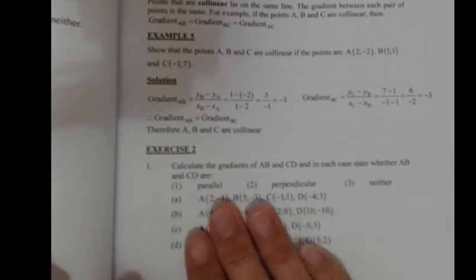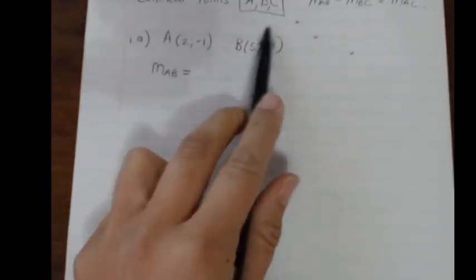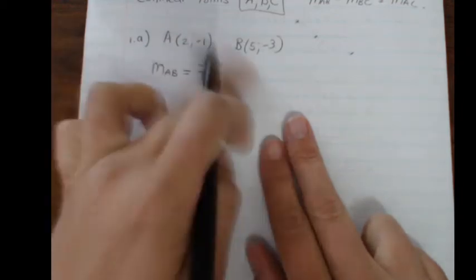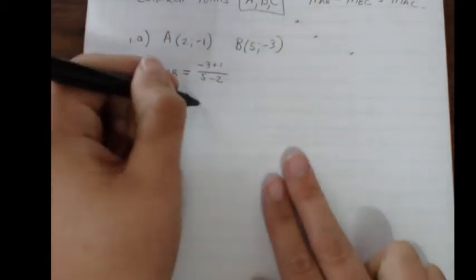For question A, I have point A at (2, −1) and point B at (5, −3). I'm going to calculate the gradient of AB — substituting straight into the formula. That gives me negative two over three.